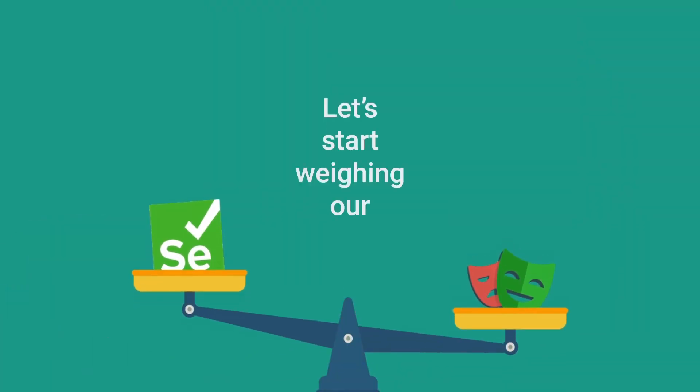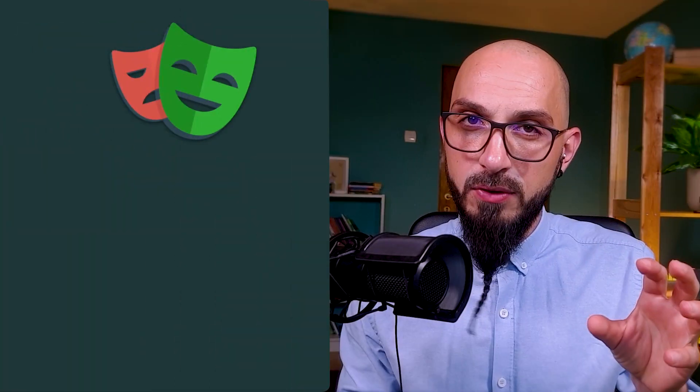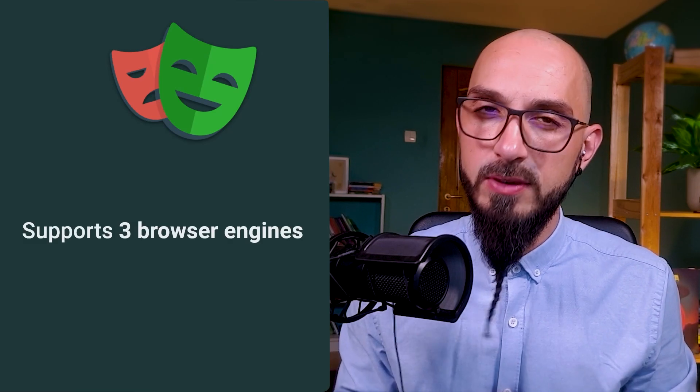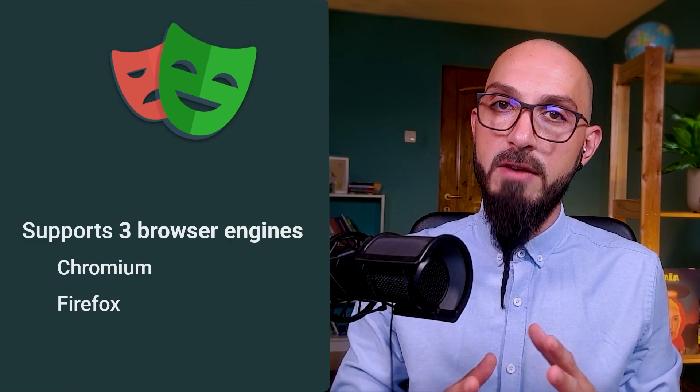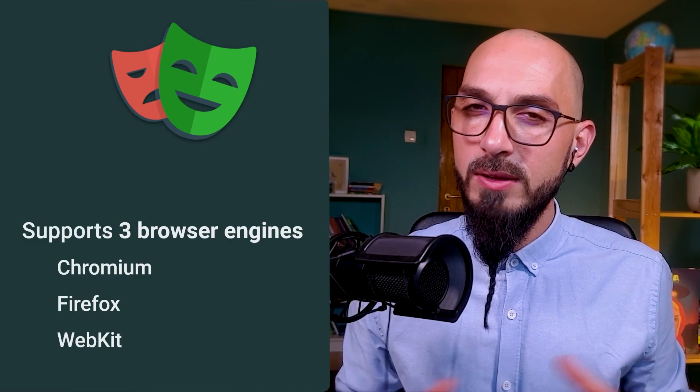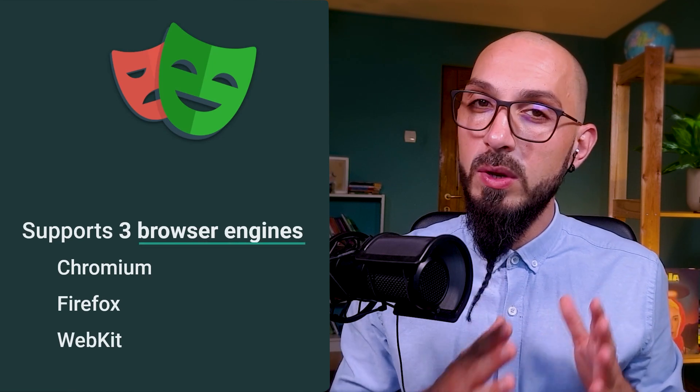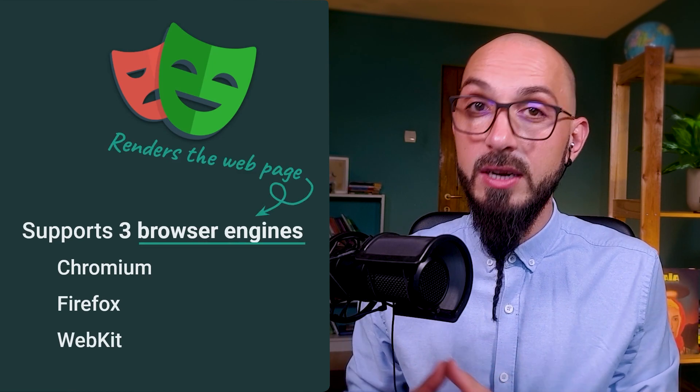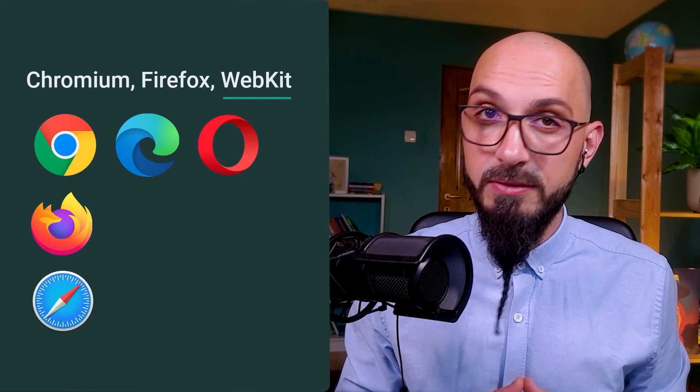Let's start weighing our options. The first thing to look at is the official browser support. We'll look at Playwright first. It supports three browser engines: Chromium, Firefox, and WebKit. These are what drives the whole rendering of the webpage. The Chromium browser engine sits behind three browsers — Google Chrome, Microsoft Edge, and Opera. Firefox is behind Firefox, and WebKit is the engine behind Apple Safari.